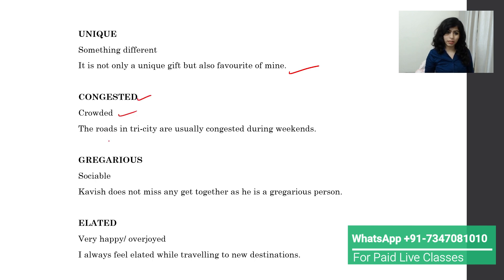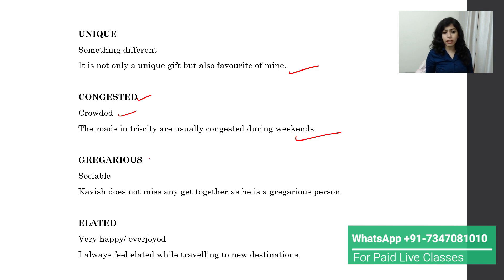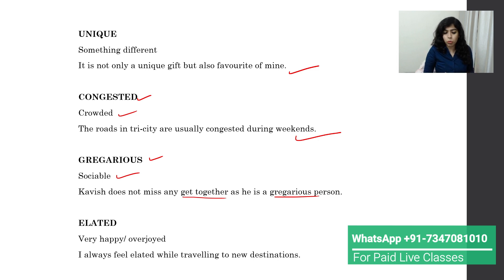Next is 'congested,' which means crowded. For example: 'The roads in Tri-City are usually congested during weekends,' meaning there is heavy traffic. Then we have 'gregarious,' which means sociable. For example: 'Kavish does not miss any get together as he is a gregarious person' — meaning he regularly meets friends and family.